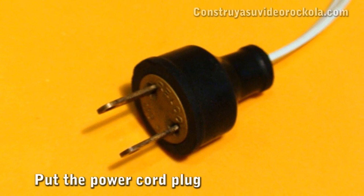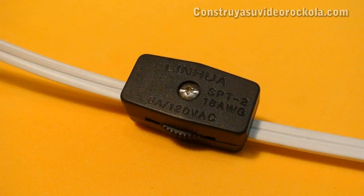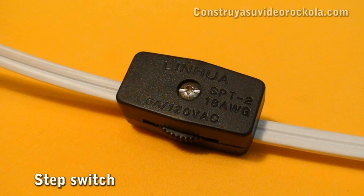In the end we put the plug on the power cord. We place a switch to turn our strobe on and off.